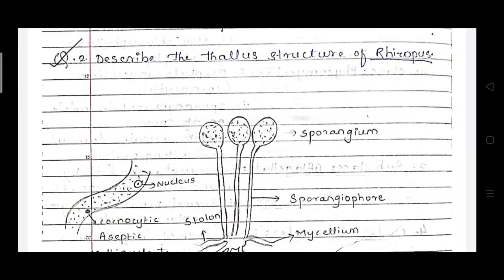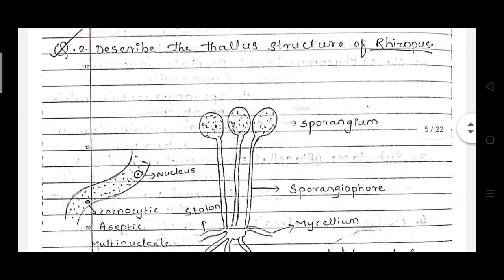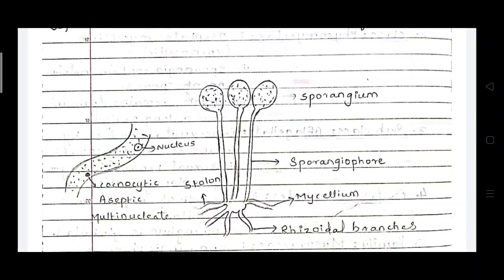Hello students, today we discuss about the thallus structure of Rhizopus. In this figure we can see the structure of Rhizopus. At the base there are rhizoidal branches, and on that there is the mycelium. Stolons are present on that mycelium, and the sporangiophore is present.